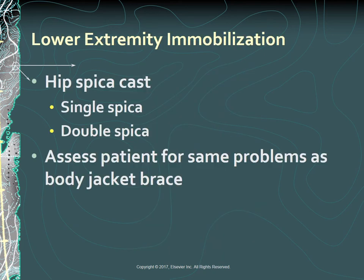The hip spica cast is now mainly used for femur fractures in children to immobilize the affected extremity and trunk. It extends from the nipple line to the base of the foot—that's a single spica—and may include the opposite extremity up to the area above the knee, which is the spica-and-a-half, or both extremities, which is the double spica.